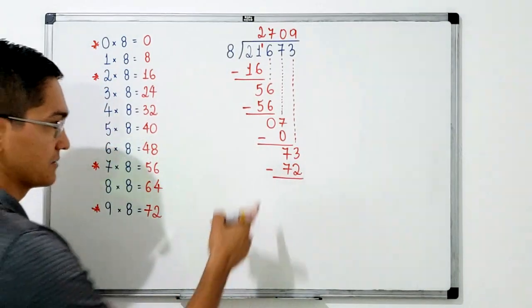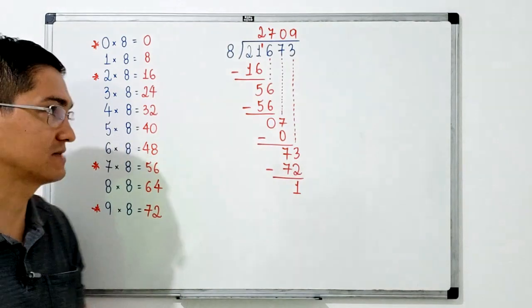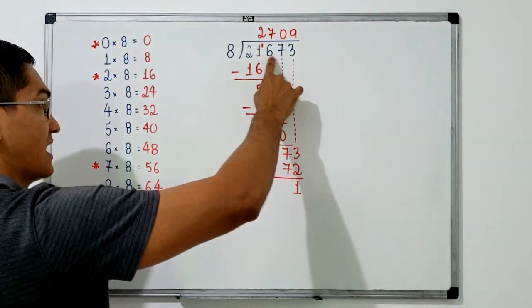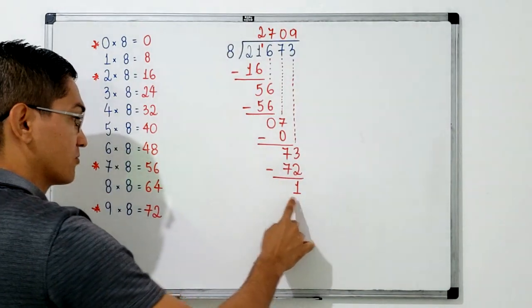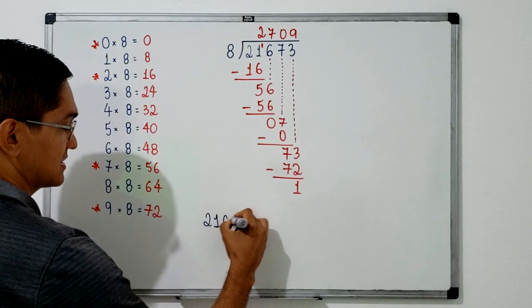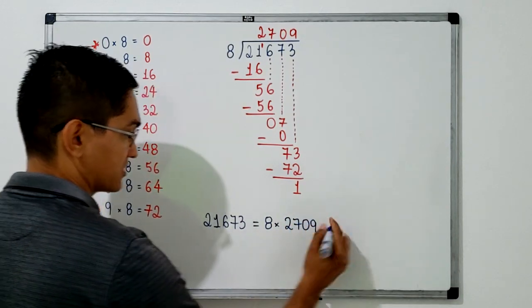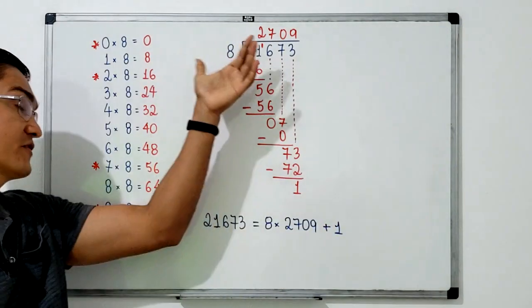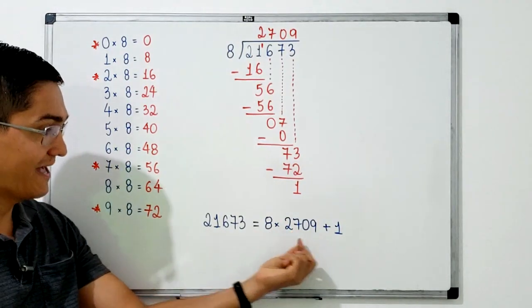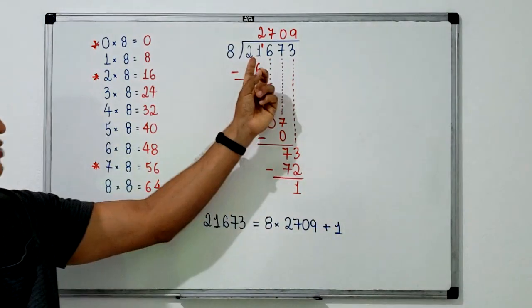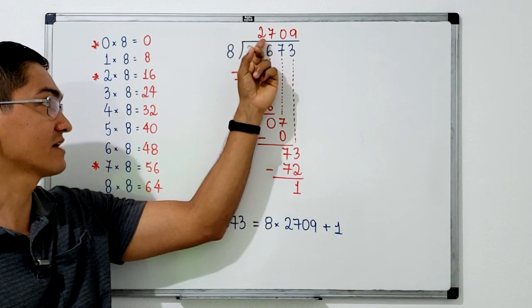There are no other digits to bring down. When dividing 21,673 by 8, the whole quotient is 2,709 and the remainder is 1. We can write: 21,673 equals 8 times 2,709 plus the remainder 1. The dividend should equal the product of the divisor and the quotient, plus the remainder — and it checks out.